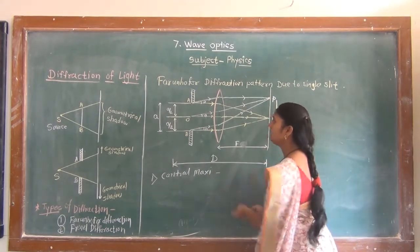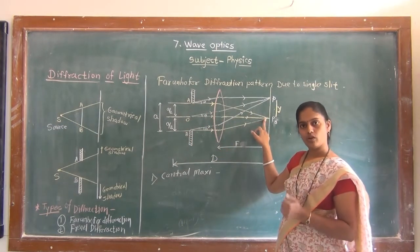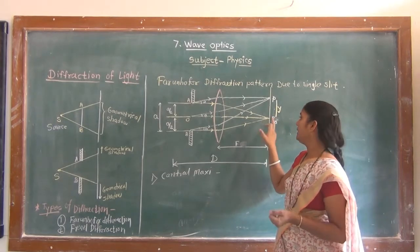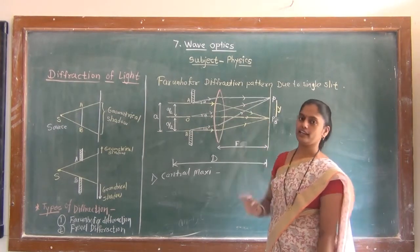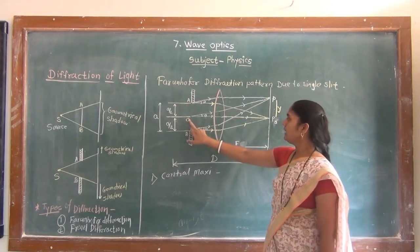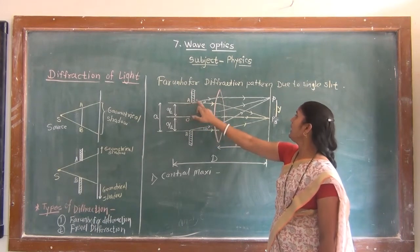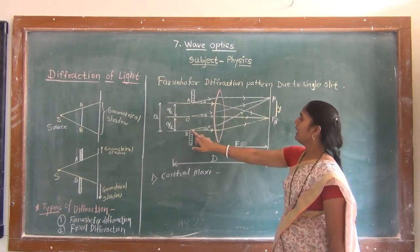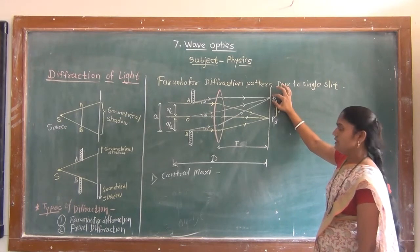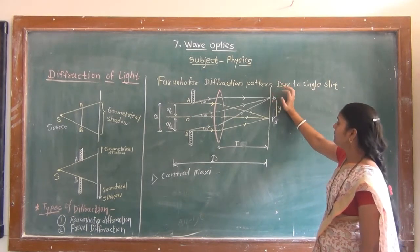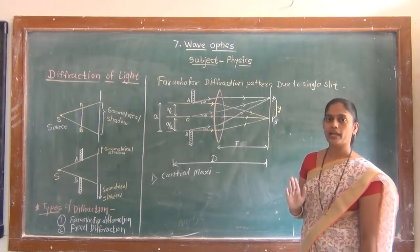When we get the path difference between E to P0 and D to P0 equal to zero, the point P0 will be a bright point. Now, choose another point P which makes an angle theta along OP0. Consider rays A to P, O to P, and B to P. Whether this point will be bright or dark is decided by the path difference between these two rays.